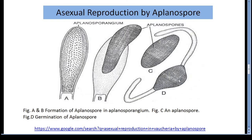Asexual reproduction by aplanospore: the aplanospore develops in dry conditions and especially in terrestrial forms. The aplanospore is produced in an aplanosporangium formed at the tip of the lateral branches. The content of the aplanosporangium contracts and gets rounded, then secretes a thin wall around it to become an aplanospore. The aplanospore escapes by the irregular rupture of the aplanosporangium. During favorable conditions, the aplanospore germinates forming a tubular outgrowth.